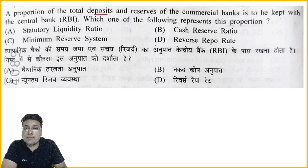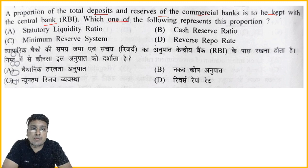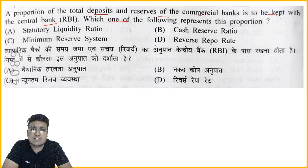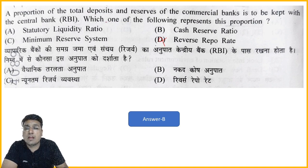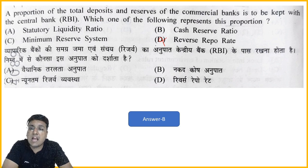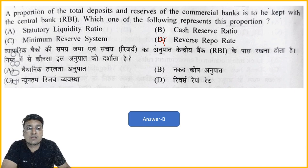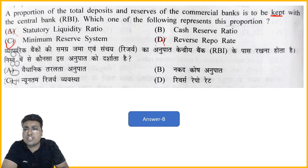Next question: a proportion of total deposits that commercial banks must keep with the central bank — which option represents this? Options: A) SLR, B) CRR, C) Minimum Reserve System, D) Reverse Repo Rate. Reverse Repo Rate is the rate at which RBI borrows from banks — not relevant here. SLR (Statutory Liquidity Ratio) requires banks to maintain reserves, but not necessarily with RBI — the bank can maintain it themselves. Minimum Reserve System is completely different. The correct answer is Option B — Cash Reserve Ratio (CRR), the proportion of deposits commercial banks must keep with the RBI.